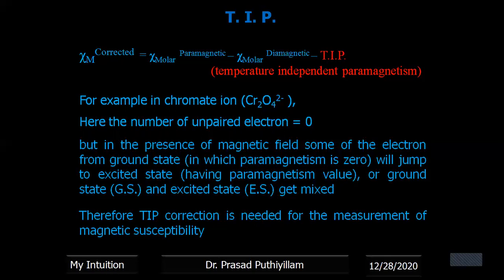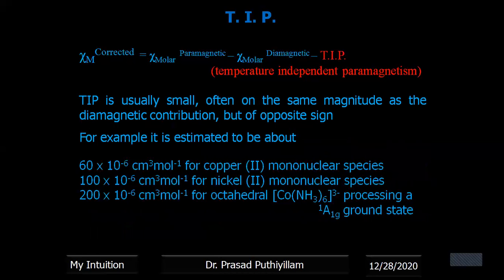Therefore, unpaired electrons and paired electrons, they exist - that down state and excited state, even they exist as a mixed state. That means in case of chromate ion, because of this excitation of electrons in presence of magnetic fields, we have the magnetic behavior introduced, or we call it as temperature independent paramagnetism. So this temperature independent paramagnetism, that correction needs to be included in certain examples.